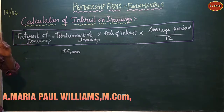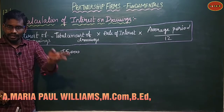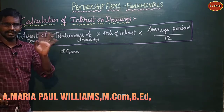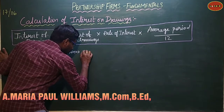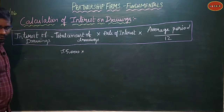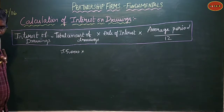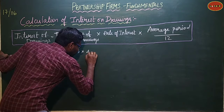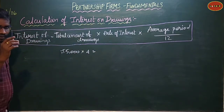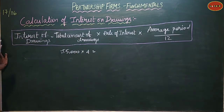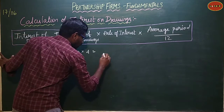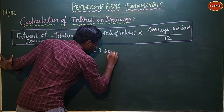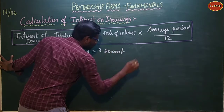First, we convert quarter to year. Each quarter he withdraws Rs.5,000. One year has 4 quarters, so 5,000 into 4 equals Rs.20,000. Kevin withdraws Rs.20,000 per year.